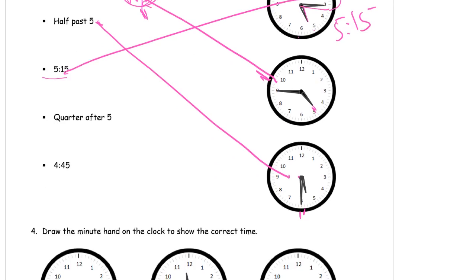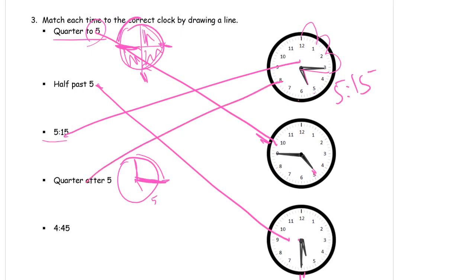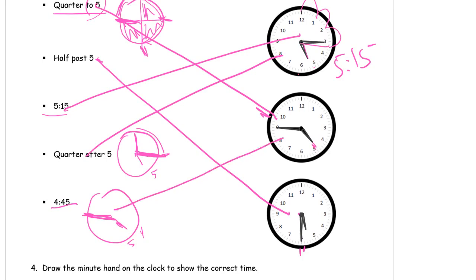Quarter after five — think about what this clock face would look like before you start matching it up. Some of these are used more than once because there's more than one way to say what these times are. Quarter after five is going to be a little bit after the five for the hour hand, and quarter after is one quarter of the clock face — the minute hand is going to be right about there. That's the same as 5:15. And then 4:45 — the minute hand is pointing over here for 45 minutes, and the hour hand is going to be in between the four and the five, closer to the five. That's this one, which we also called quarter to five.